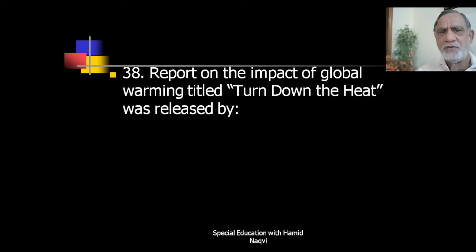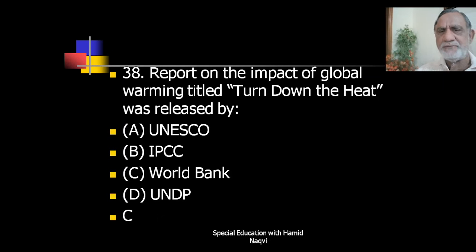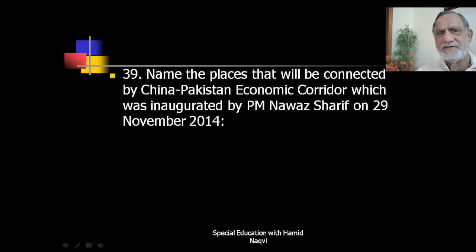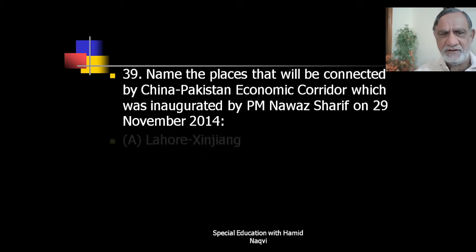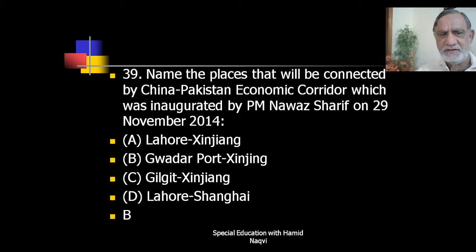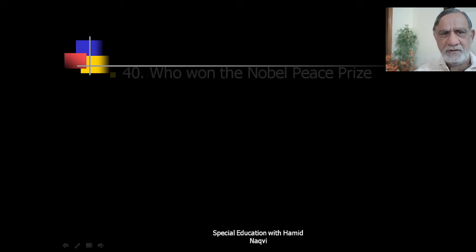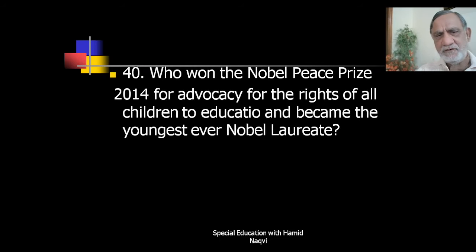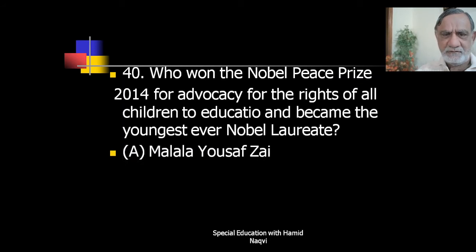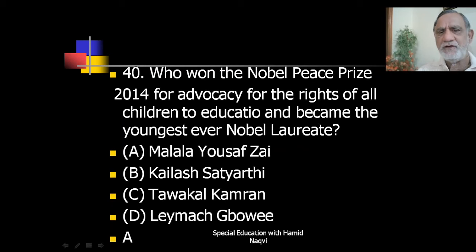The report on the impact of global warming titled 'Turn Down the Heat' was released by the World Bank. The places connected by the China-Pakistan Economic Corridor (CPEC), inaugurated by Prime Minister Nawaz Sharif on 29th November 2014, are Gwadar Port and Kashgar. Who won the Nobel Peace Prize 2014 for advocacy for the rights of all children to education, becoming the youngest ever Nobel laureate? It was Malala Yusuf Zai.